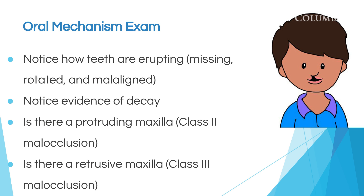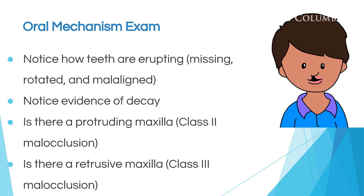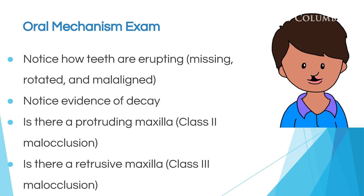When looking at a child's mouth, you'll look at their lips, tongue, palate, velum, and also their teeth. You want to make sure that their teeth are erupting normally — are there any teeth that are missing? Are there any teeth that are rotated or not aligned properly? You'll also check for any dental decay. Looking at their maxilla to see if it's protruding — is it a class 2 malocclusion, which would be an overbite? Or is it a retrusive maxilla — a class 3 malocclusion, which is an underbite?